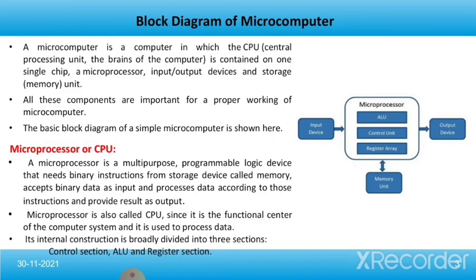Now we will talk about the block diagram of a microcomputer. A microcomputer consists of a CPU — the central processing unit — contained on a single chip, a microprocessor, along with input-output devices and a storage unit. All these components are important for the functioning of the microcomputer. In the basic block diagram, the first block is the microprocessor, which consists of an ALU, control unit, and register area.